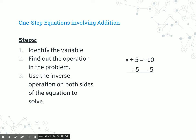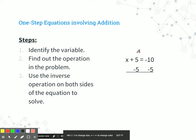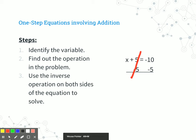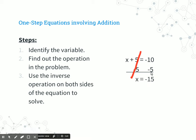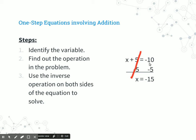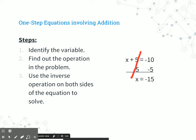Whatever you do to one side of the equation, you have to do to the other. The positive 5 and the negative 5 cancel out, and we're left with x on the left side. Negative 10 and negative 5 make negative 15, because if the signs are the same, you add. You can always check your answers by plugging back in — negative 15 plus 5 does equal negative 10. That's a way to verify your solutions are correct.